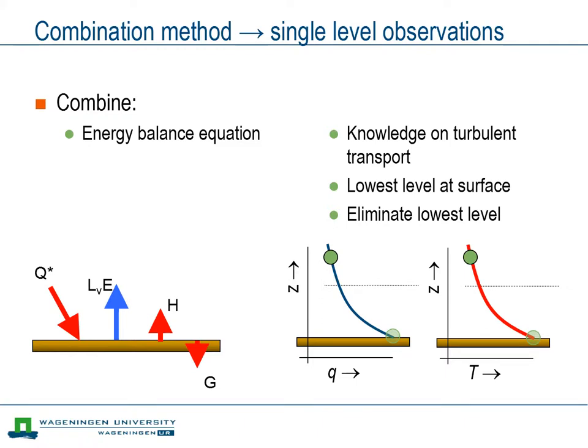First, the dependence of the fluxes on the aerodynamic resistance cannot be eliminated and hence knowledge about the turbulent state of the atmosphere is needed. Furthermore, one needs to know the conditions for temperature and humidity at the surface. This problem is often circumvented by eliminating those conditions from the equations. Examples of those single-level combination methods are the Penman equation and the Penman-Monteith equation.